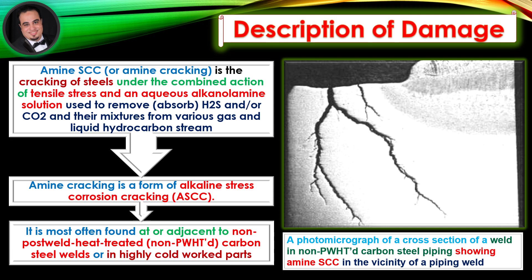Amine Cracking is a form of Alkaline Stress Corrosion Cracking. It is most often found at or adjacent to non-post-weld heat-treated carbon steel welds or in highly cold worked parts. As illustrated in the figure, a photomicrograph of a cross-section of a weld in non-post-weld heat-treated carbon steel piping shows Amine Stress Corrosion Cracking in the vicinity of a piping weld.